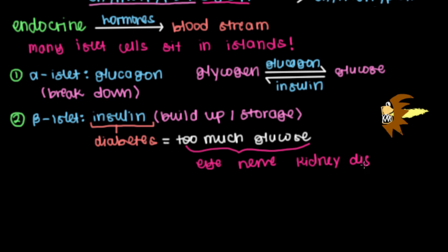With too much glucose, over time we're unable to see. The nerves, most commonly in our feet, are not able to sense pricks or damage that occurs there, and eventually that could cause amputation. Our kidneys stop working over time, which could lead to dialysis, and that causes early death. In addition, glucose goes all over the body and causes things like earlier onset heart attack and other complications.